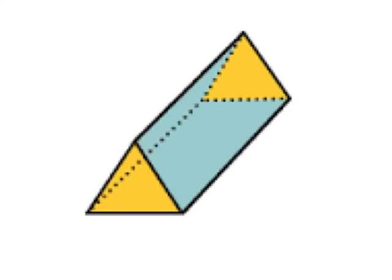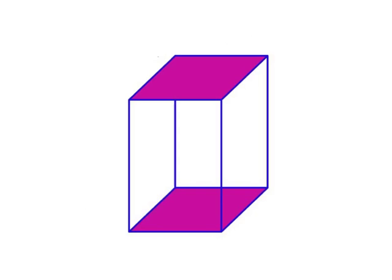Imagine that this triangular prism is sitting flat on a table on this face here. That would mean this rectangular face is horizontal and these triangular faces would be perfectly vertical, so we could say the triangular face is perpendicular to this rectangular face. Now imagine this rectangular prism is sitting flat on a table on its base — this purple base right here. The purple base would be perfectly horizontal, and the four rectangles on the side are all perfectly vertical, making them perpendicular to the bases.